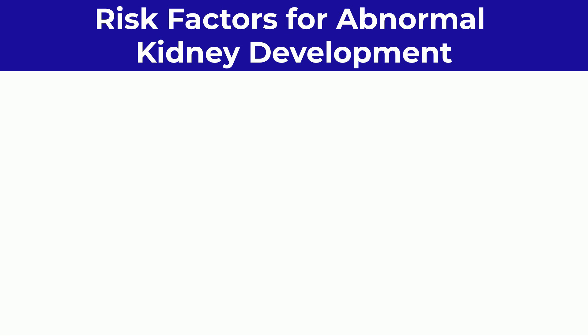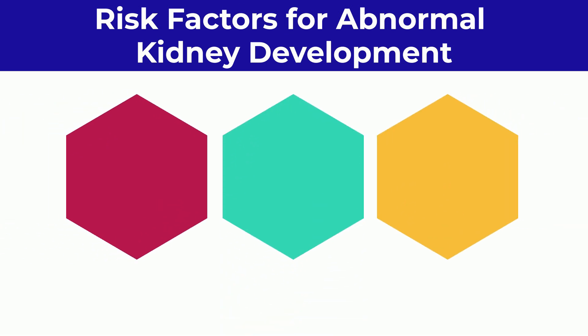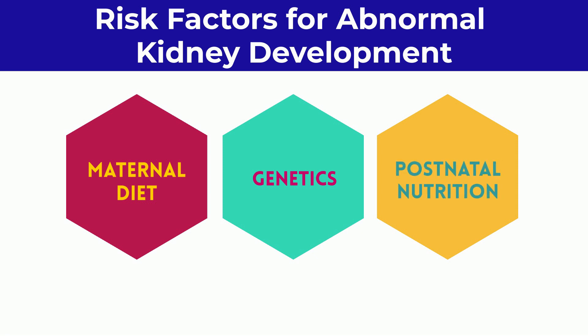Several different factors have been shown to contribute to abnormal kidney development. During fetal development, negative events can have an impact — for instance, low birth weight and prematurity have been associated with low nephron count and increased risk of hypertension and kidney disease later in life. Notably, the health and diet of the mother during pregnancy can also contribute. A second factor is genetics: mutations can affect cell interactions during nephron formation and result in lower nephron counts. A third factor is postnatal nutrition — studies have shown that overeating or diets with excessive protein for children can lead to chronic kidney disease later in life.